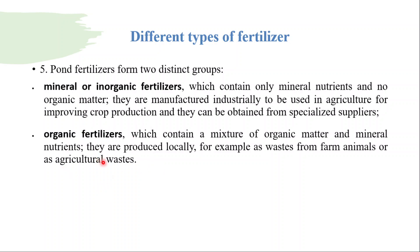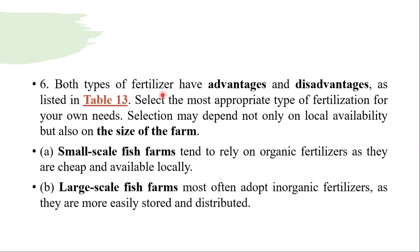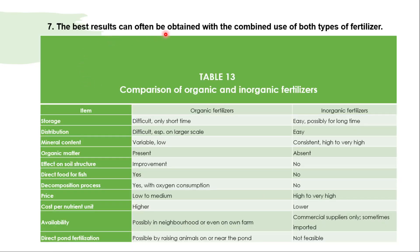Both types of fertilizers — organic and inorganic — have advantages and disadvantages. Selection of the most appropriate type depends on local availability and the size of the farm. Small-scale fish farms tend to rely on organic fertilizers as they are cheap and locally available, while large-scale fish farms most often adopt inorganic fertilizers as they are more easily stored and distributed. The best results can often be obtained with the combined use of both types.